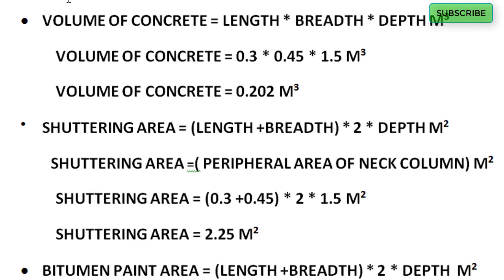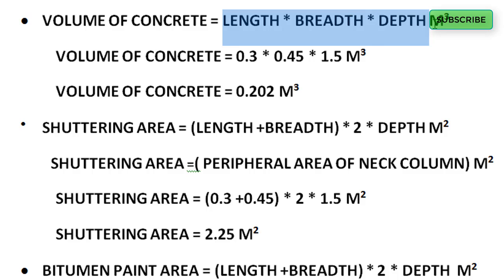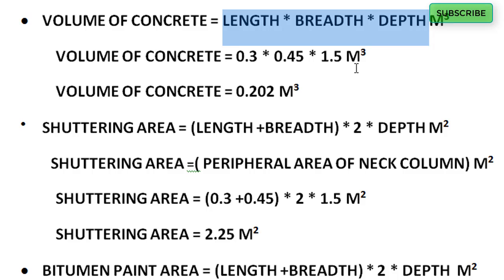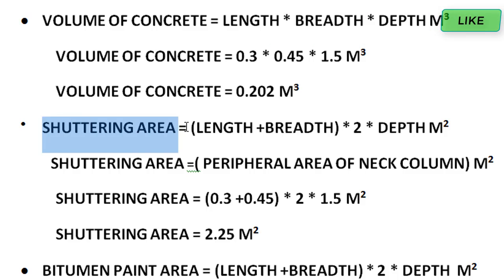For these values we have to calculate volume of concrete, shuttering area, and bitumen paint area. The volume of concrete formula is length into breadth into depth in cubic meters. So here we have 0.3 into 0.45 into 1.5, which equals 0.202 cubic meters.